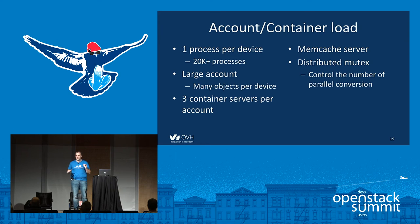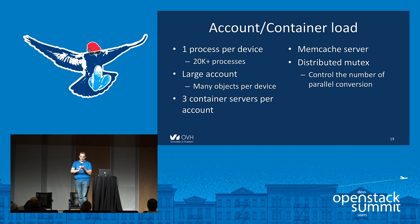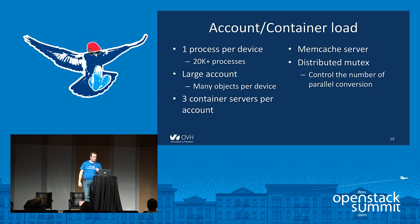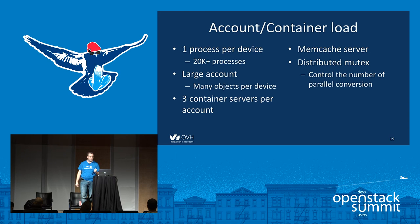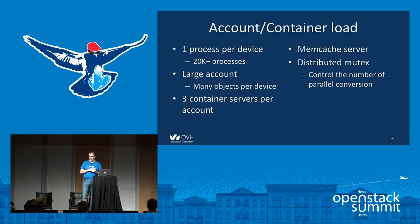Second problem: when you start converting a container, especially a big one, all object servers start converting at the same time. Since they act like a proxy, they do HEAD requests to check that the account and container exist. When you have 20,000 processes reaching the same container server simultaneously, it hurts. The fix was simple: just use the cache middleware on the pipeline of the conversion process, adding Memcache. That fixed the load problem on the account and container servers. We also added a distributed mutex to control the number of parallel conversions, because converting too many objects at the same time was creating a lot of IOPS on the cluster.